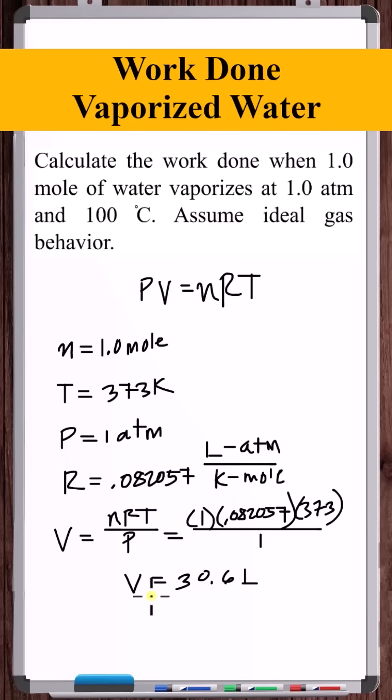The water vapor expanded from zero volume to this volume against a constant pressure of one atmosphere. So the work done is just P times V, 30.6 liter atmospheres. But the work done was by the system on the surroundings, so this is negative.